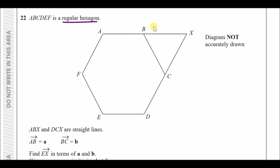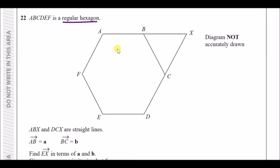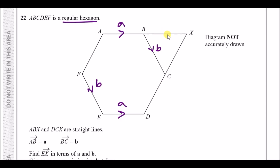ABX and DCX are straight lines. The direction from A to B is vector a, and going from B to C is vector b. For parallel lengths we assign the same vectors: A to B and its parallel are both vector a; the segment parallel to BC is vector b. We don't make assumptions about the unknown line yet, but we'll figure it out.